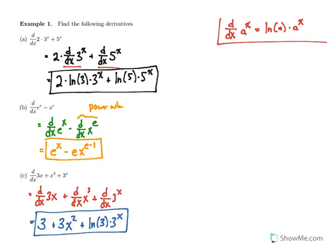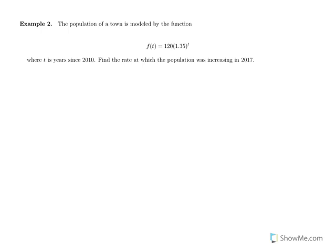One more example problem, an application problem. The population of a town is modeled by the function f(t) = 120(1.35)^t. Notice here this is an exponential function with a equal to 1.35, and t is the year since 2010. So find the rate at which the population was increasing in 2017. This means we are finding the derivative, the rate of change is the derivative, and in 2017 this is at t equals 7.